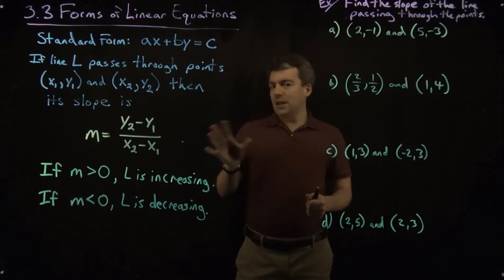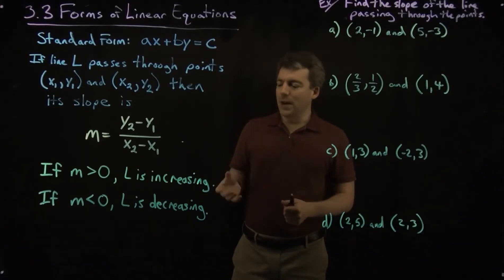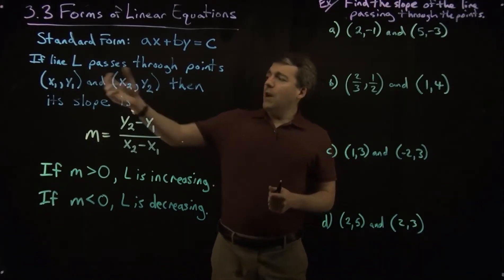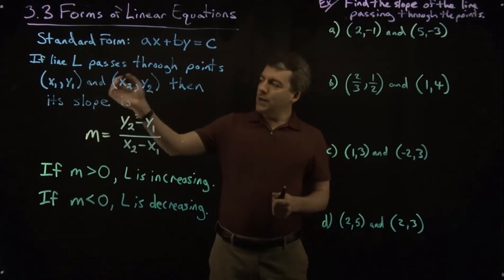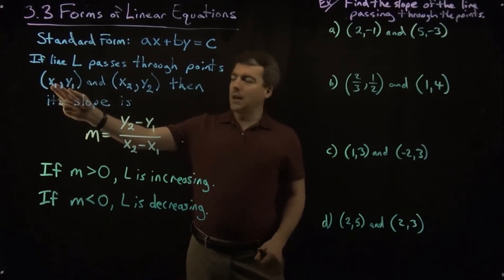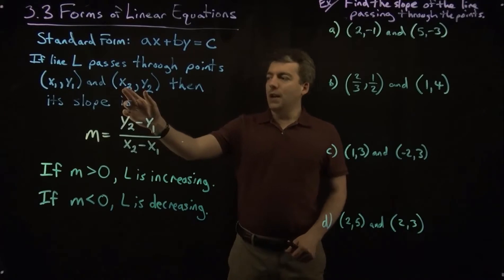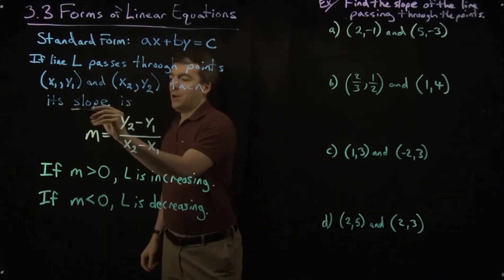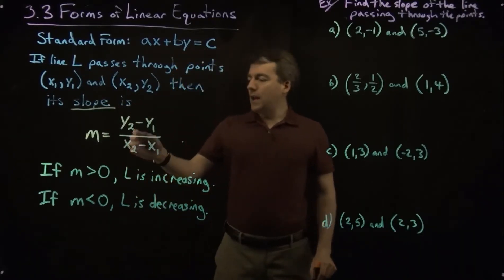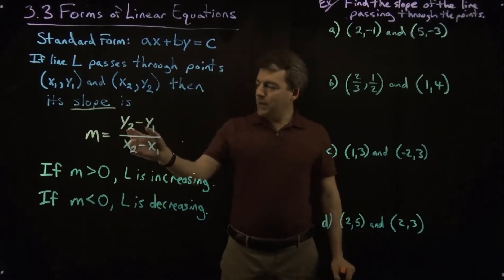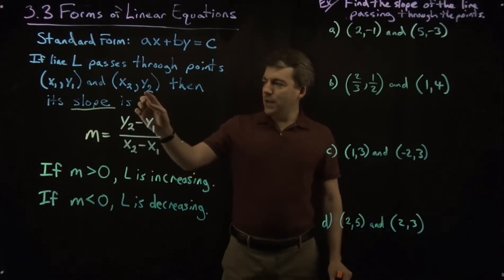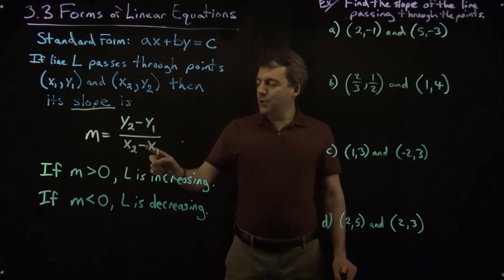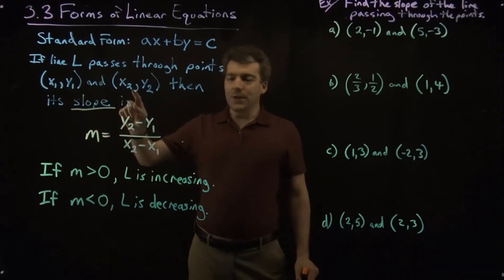So let's take a look at this other idea, this number that characterizes how much a line is increasing or decreasing. So if we have a line, and we know it passes through two points, we're going to call the first point x1, y1, and the second one x2, y2. Then we define this number called the slope, and it's given by the following. So it's y2 minus y1, so that is the difference in the y-coordinates, divided by x2 minus x1, that is the difference of the x-coordinates.